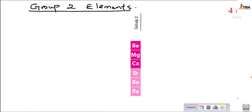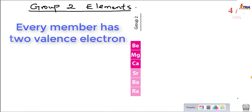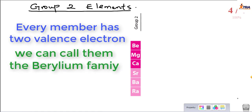Group 2 elements are so-called because every member of this group has two valence electrons, or two outermost electrons. So as a result, we put them in group 2 of the periodic table. But if we do not call them group 2, we can call them by the name of the first element present in that group, which is beryllium. So we can call them the beryllium family, because beryllium is the first member of the group.